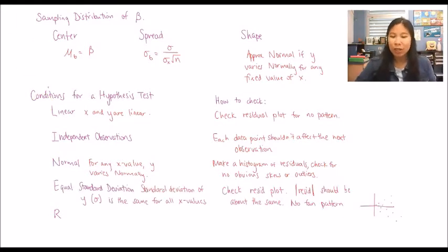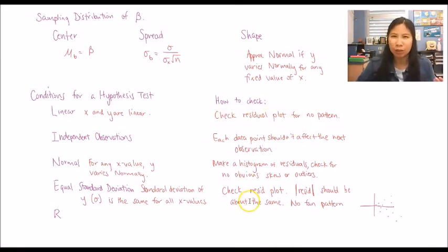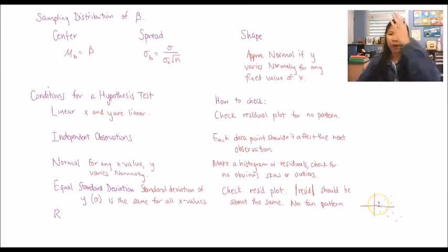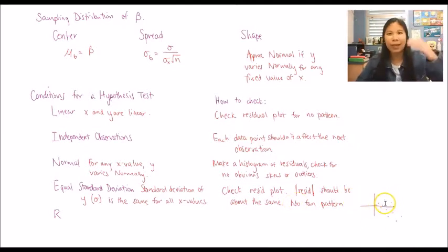If residuals show no obvious skew or outliers, we can say the distribution is approximately normal. The E stands for equal standard deviation: the standard deviation of y — sigma — should be the same for all x values. To check that, look at the residual plot again. The absolute value of each residual should be about the same — no fan pattern. A fan pattern is when the residuals start small and get wider, or vice versa. We want a scattered pattern with no fan shape.